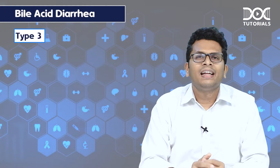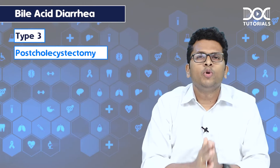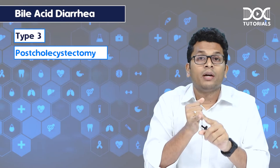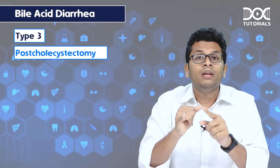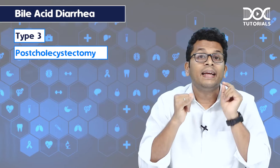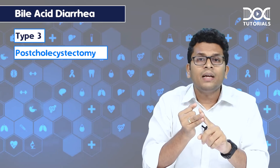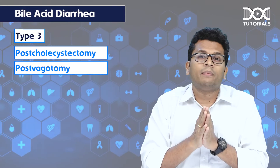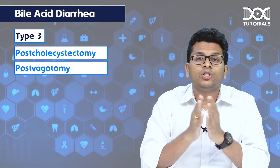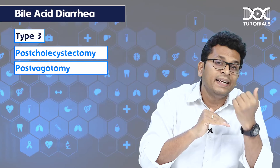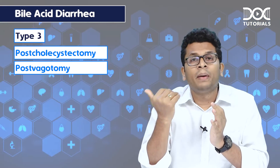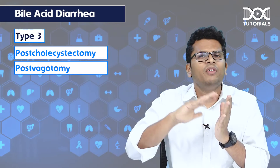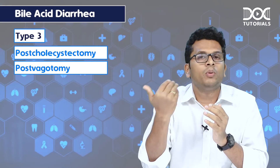Type 3 has miscellaneous causes. To name a few: it could be post-cholecystectomy — and this is important, post-cholecystectomy bile acid malabsorption is type 3. The second one is post-vagotomy. It could be secondary to chronic pancreatitis, SIBO, post-radiation enteritis, or microscopic colitis. So there are various miscellaneous causes with various mechanisms of how it could occur.